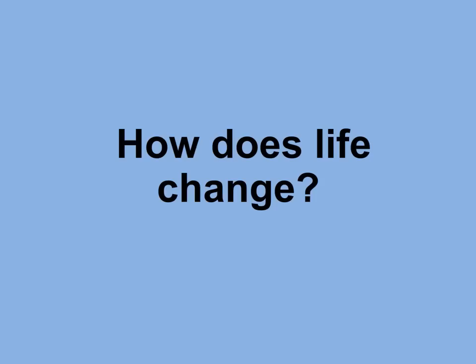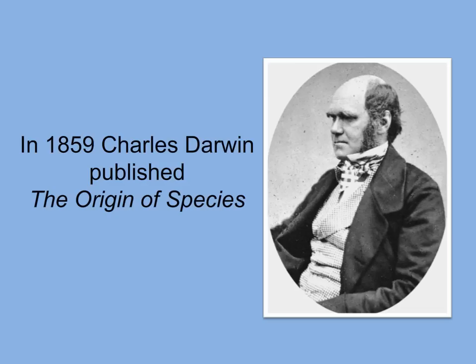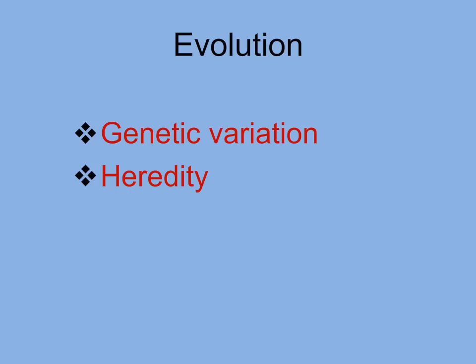The theory of evolution explains how populations, over time, have adapted to their changing environment. It wasn't until the 19th century that Charles Darwin proposed a mechanism to scientifically explain how evolution could occur. Darwin made many observations: first, all populations contain variation on a genetic level; second, offspring inherit characteristics from their parents; and third, organisms with the most appropriate characteristics for their environment will leave the most offspring. This is the mechanism of natural selection.